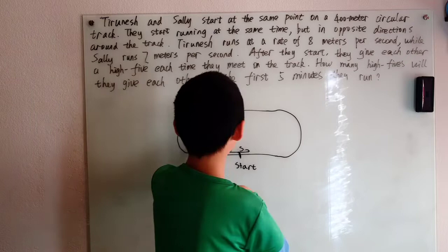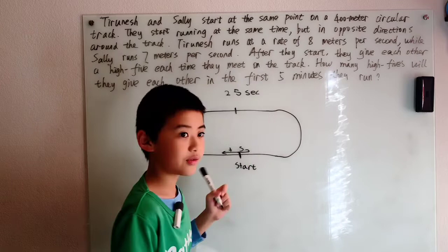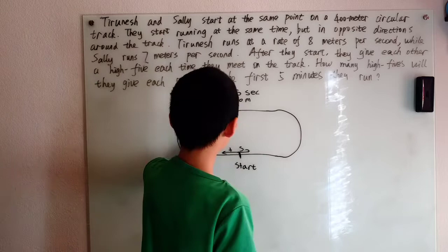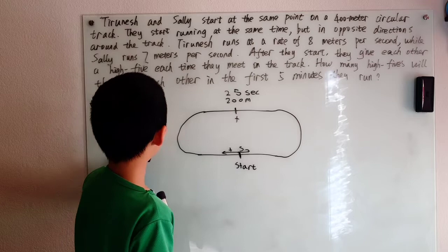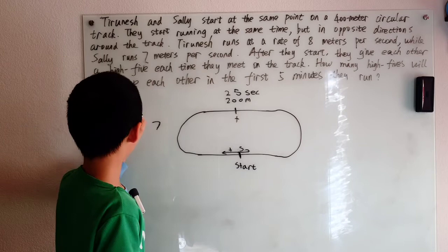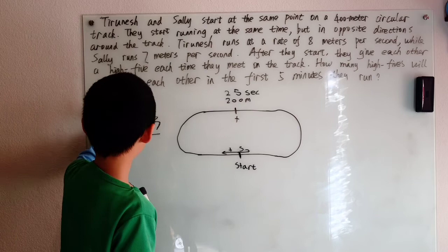So the halfway point, that's 25 seconds. After 25 seconds, Tranish is going to be at the halfway point, the 200 meter point. And that's Tranish. And little Sally, well she runs at 7 meters per second and she has 25 seconds, or 25 one-second periods. And we can just multiply this out and we got 175.